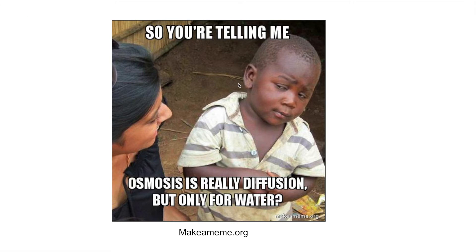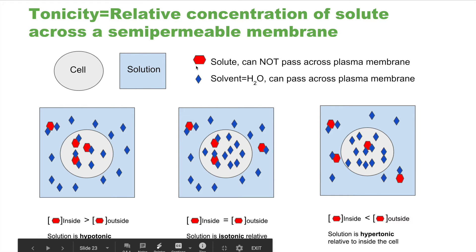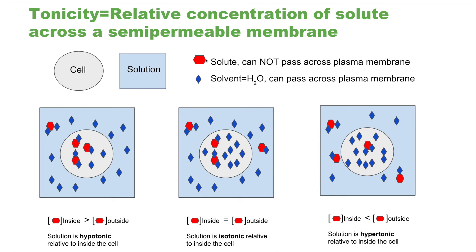When talking about osmosis, we're really talking about diffusion, but only for water. Now let's talk about an important concept called tonicity. Tonicity refers to the relative concentration of solute across a semipermeable membrane. A solution is made up of solute and solvent. The solute is represented here, and water is the solvent because the solvent of life is water.